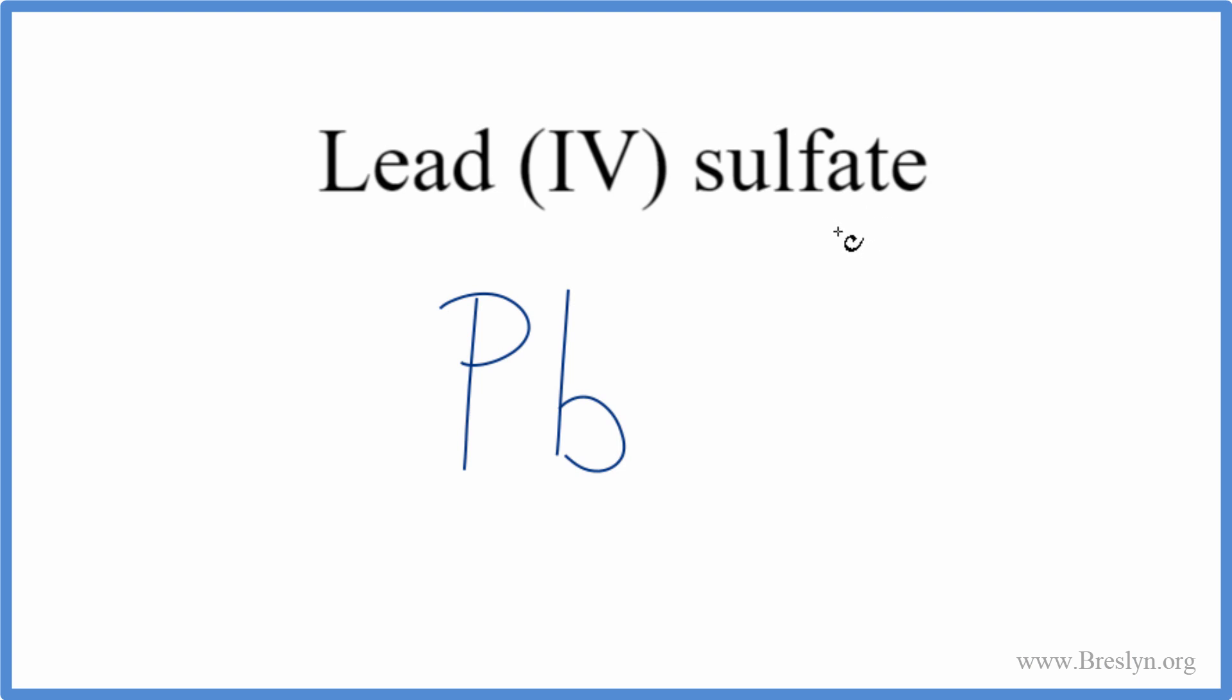And then sulfate, we won't find that on the periodic table. It ends in ate, it's a polyatomic ion. So we can look that up on a table of common polyatomic ions. Sulfate is SO4, 2 minus.